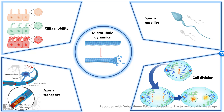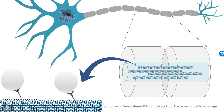Sperm motility is also dependent upon microtubule dynamics — without dynamic microtubules, the sperm would no longer be motile. Imagine a neuron: you can see the axon, which has multiple microtubules like a tract, on which molecular motors called kinesins take vesicles from the cell body to the synapses, allowing neurons to fire and release neurotransmitter into the synaptic cleft.